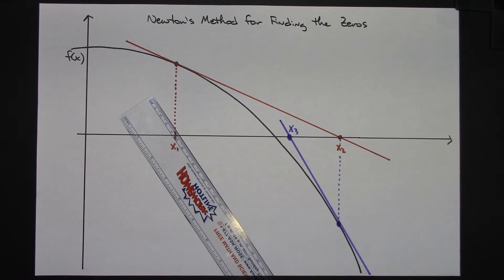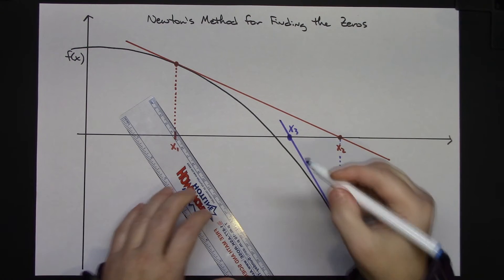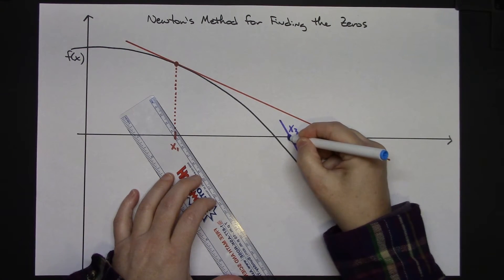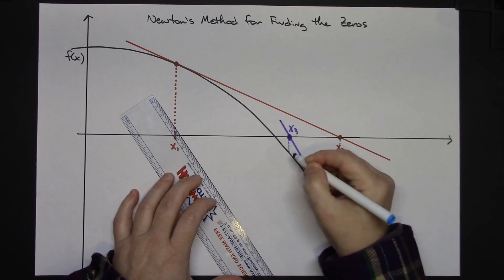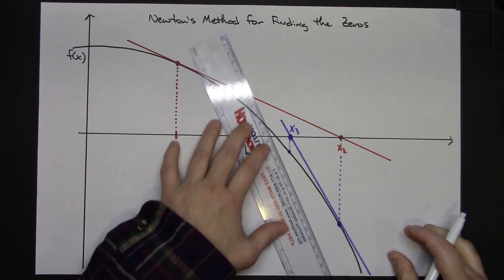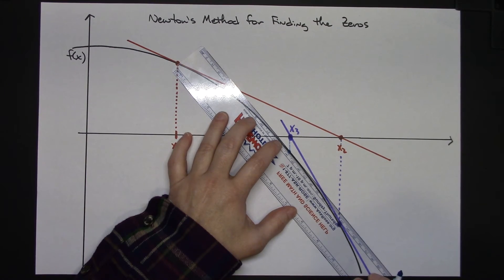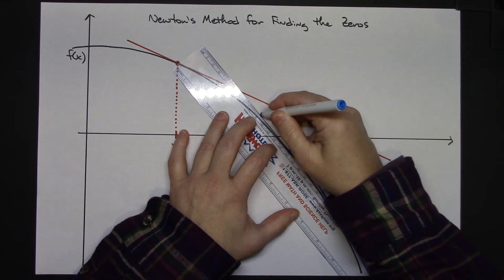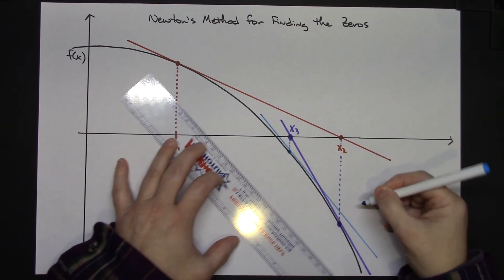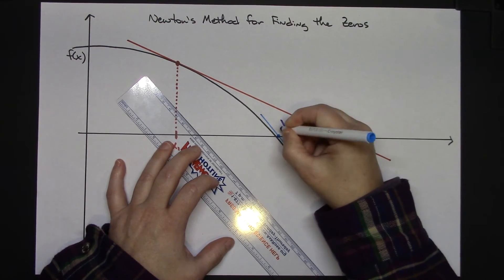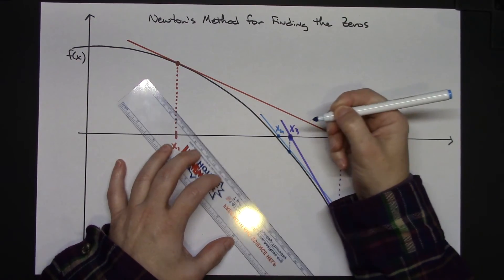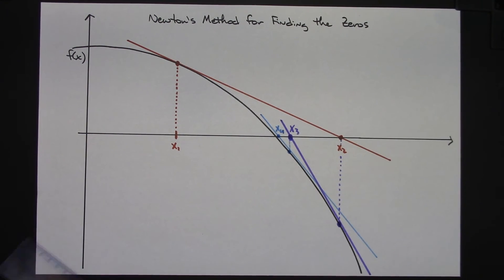And if this process is continued you will ultimately get really close to that zero. So again I could take that, I could go to my curve, vertical line to my curve, and at that point along the curve draw a tangent line. And again that being my fourth approximation and yet even better.